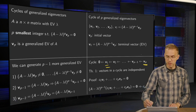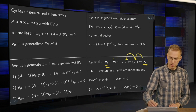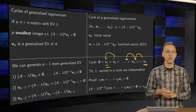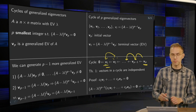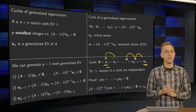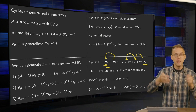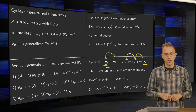So what we have is a cycle of vectors: the initial vector vp ending with the terminal vector v1, which is an eigenvector. If you multiply by (A − λI), you go from vp to vp−1, vp−2, and so on until v2, and then multiplying again gives v1. If you then multiply v1 by (A − λI), you get the zero vector, because v1 is an eigenvector. So from one initial vector, you get a whole cycle of p generalized eigenvectors.